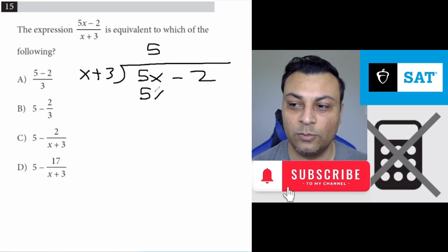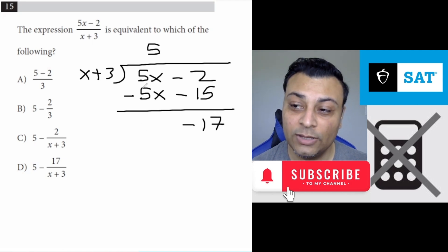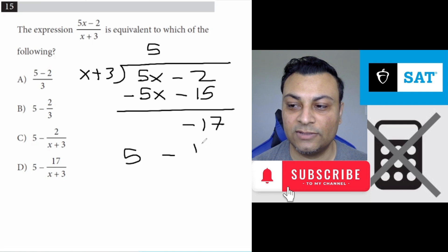5 times x is 5x, but we're going to subtract it later. 5 times 3 is 15, but we're going to subtract it later. You end up with negative 17 as a remainder. So the final answer is 5 minus 17 over x plus 3, which is choice D. That's one way.